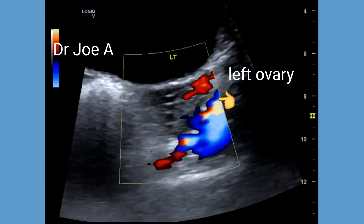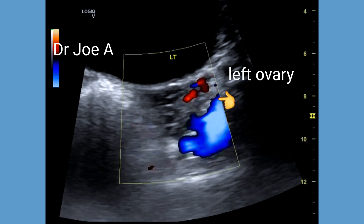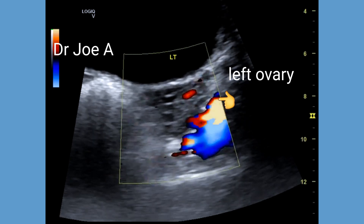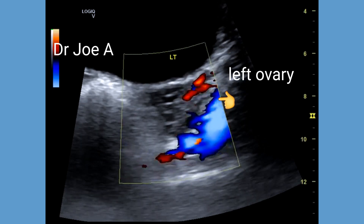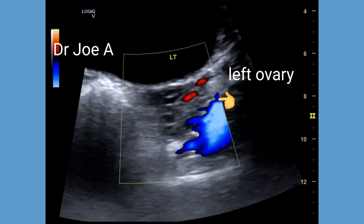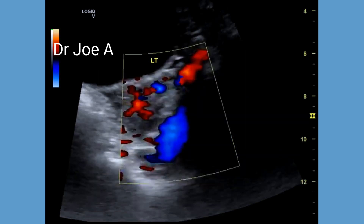Color Doppler shows mild vascularity of the affected left ovary, suggesting partial torsion of the left ovary.